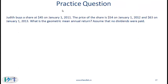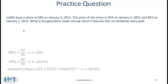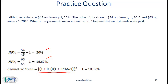To make sure you understand this concept, try this practice problem. Calculate the return for year 1 and year 2, then compute the geometric mean. Since we have two periods, the exponent is 0.5 — that is, 1/2. Subtract 1 to get the return. You should get 0.1832, which is 18.32%.